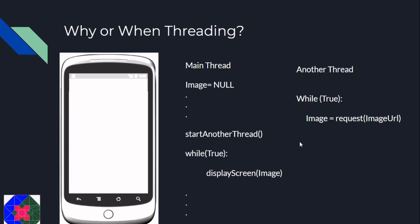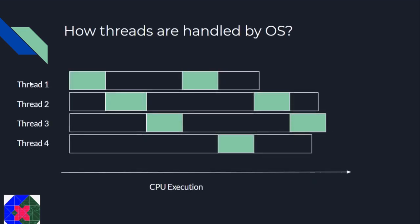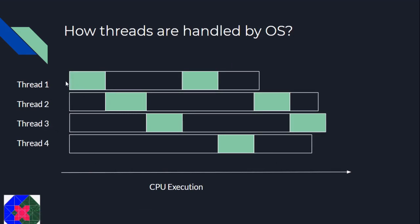Another example where multithreading could be used is in servers — a server can service multiple requests in different threads. But I said that threads run concurrently — that is actually not true. Let's say we have 4 threads. The CPU continuously switches between threads, executing a bit of thread 1, then thread 2, then thread 3, then thread 1 again, and so on. At any point in time, the CPU is executing only one thread, but since it switches between different threads, it gives us the effect of concurrency.